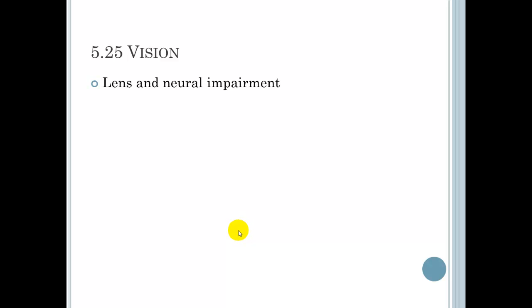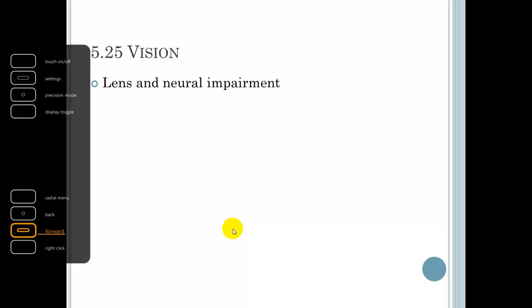5.25, vision. We have lens and neural impairment. Cataracts, lens loses some of its elasticity and shape, so we lose some of our eyesight. Also, as far as neural impairment goes, they can get retinopathy, and this will cause impairment in their actual vision as well.